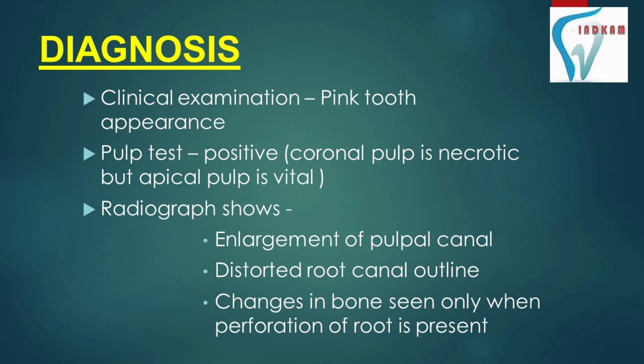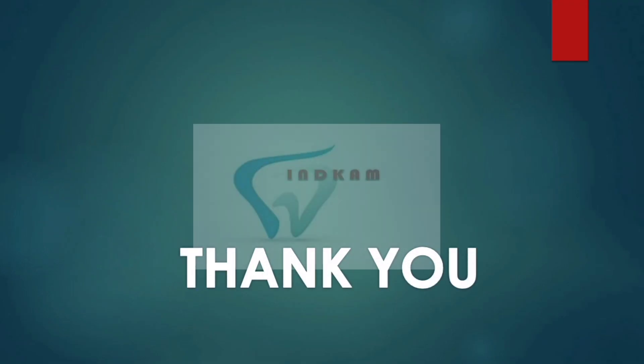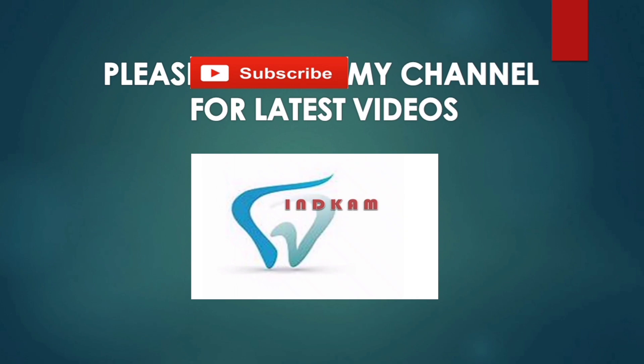Diagnosis: during clinical examination we can see pink tooth appearance. Pulp test may be positive because the coronal pulp is necrotic but the apical pulp is vital. On radiographs, enlargement of the pulpal canal is seen, along with a distorted root canal outline. Changes in bone are seen only when perforation of the root is present. Treatment involves pulp removal and surgical treatment if conventional treatment fails.